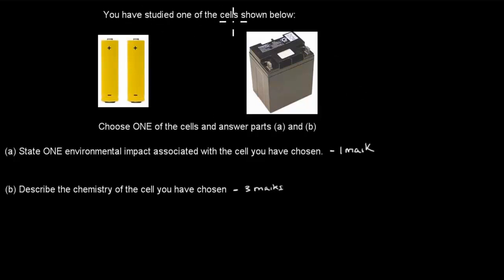So I'll read the actual question. You have studied one of the cells shown below. So this one and this one. Choose one of the cells and answer parts A and B. And then A is state one environmental impact associated with the cell you have chosen. That's worth one mark. And B is describe the chemistry of the cell you have chosen. And that's worth three marks. These pictures are not exactly the same pictures, but they show the exactly same battery. So these types of batteries are the ones you've studied. And you have to choose one. I'll give you five seconds to pause the video.